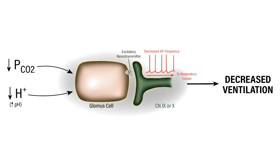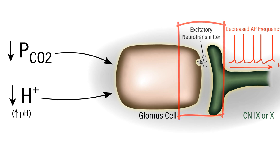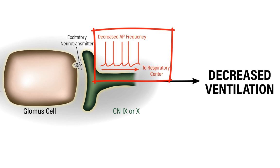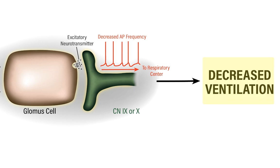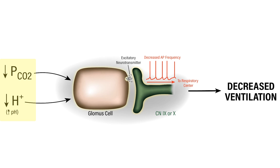In addition to increasing ventilation, the peripheral chemoreceptors can also be stimulated to decrease ventilation. The main factors promoting a decrease in ventilation are a reduction in the partial pressure of carbon dioxide and a reduction in proton concentration. Both reduced PCO2 and proton concentration cause a reduction in the excitability of the glomus cells, decreasing action potential frequency, reducing neurotransmitter release, and reducing action potential frequency of the associated cranial nerve. The reduced action potential frequency is relayed to the medullary respiratory center, causing a reduction in alveolar ventilation. This is appropriate because a reduction in ventilation will cause an increase in alveolar and arterial PCO2, and also an increase in proton concentration.